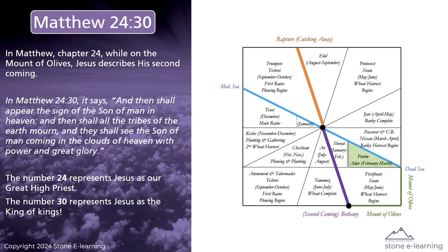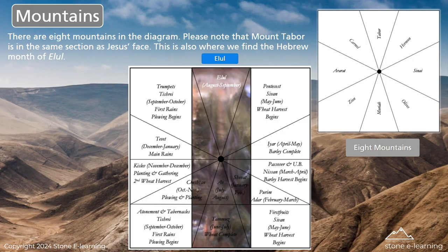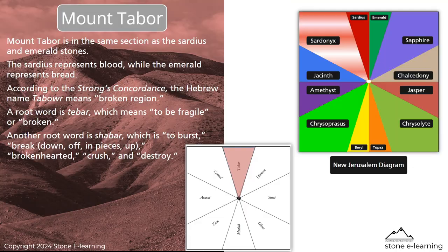In Matthew chapter 24, while on the Mount of Olives, Jesus describes his second coming. In Matthew 24:30 it says, 'And then shall appear the sign of the Son of Man in heaven, and then shall all the tribes of the earth mourn, and they shall see the Son of Man coming in the clouds of heaven with power and great glory.' The number 24 represents Jesus as our great high priest, while the number 30 represents Jesus as the King of Kings. There are eight mountains in the diagram. Please note that Mount Tabor is in the same section as Jesus' face, and also where we find the Hebrew month of Elul. Mount Tabor is also in the same section as the Sardius and emerald stones — the Sardius represents blood, while the emerald represents bread. According to the Strong's Concordance, the Hebrew word tabar means 'broken region.'